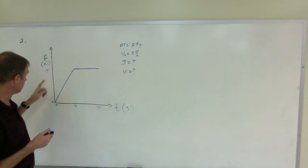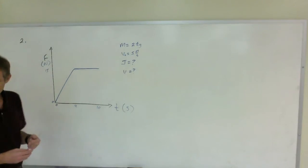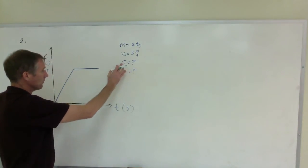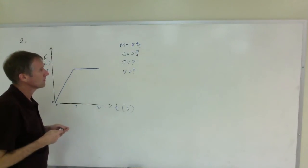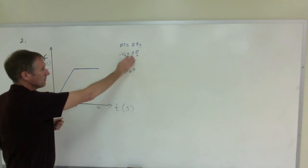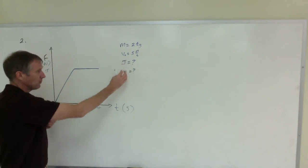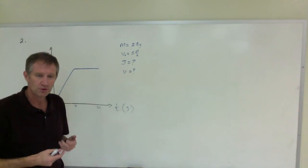From 4 to 10 seconds it stays constant at 15 newtons. In order to figure out the impulse, we have an object with a mass of two kilograms. Its initial velocity is five meters per second, and I want to use the graph to figure out the impulse. And once we have that, I'll figure out the velocity using the impulse momentum theorem.